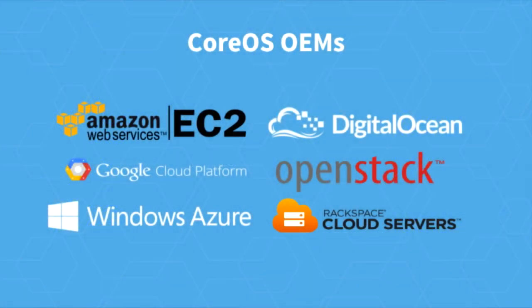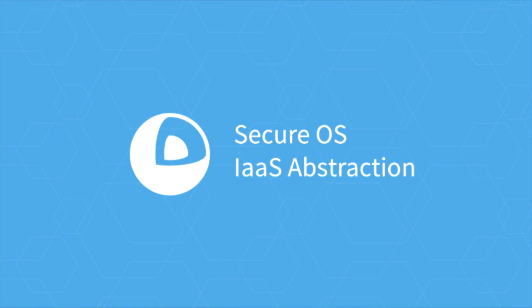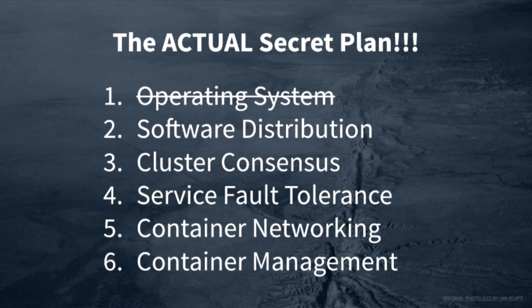An operating system is kind of useless if it only runs on one set of infrastructure — only on bare metal, only on EC2. CoreOS has a concept of OEMs. OEMs elevate the operating system and the interface exposed to applications running on top just enough so that you have a consistent deployment experience for your tools, for your container orchestration system of choice, without having to code directly to the OpenStack config drive or EC2's metadata service. So with that secure operating system and infrastructure abstraction, we can safely cross off our first real problem.